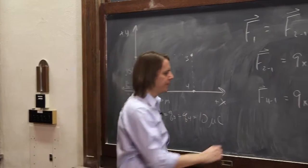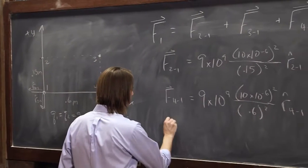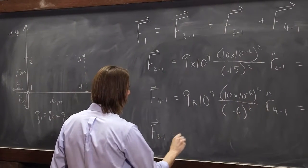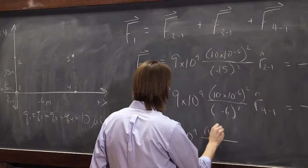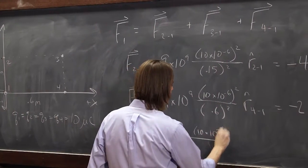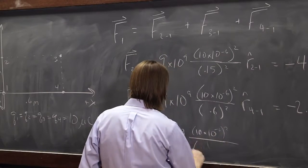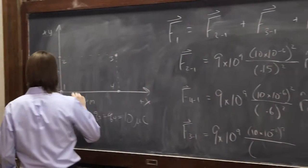Finally, there's F3,1. 9 times 10 to the 9. 10 times 10 to the minus 6 quantity squared over this distance here.